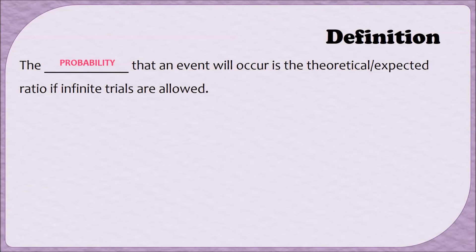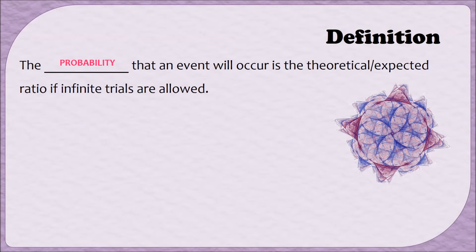The probability that an event will occur is the theoretical or expected ratio if you allow an infinite number of trials. For example, think about tossing a coin a hundred times. If the coin is fair, you would expect about half of the time to get heads and the other half to get tails, so you would expect 50 tosses to come up heads and 50 to come up tails.